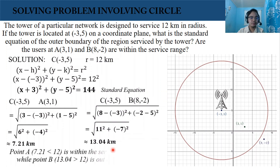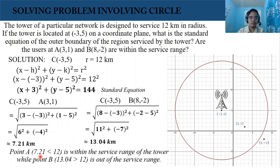Therefore, point A, which has a distance of 7.21, is less than 12, our radius, so it is within the service range of the tower. While point B, at 13.04, is greater than 12, that is why point B is out of the service range of the tower.